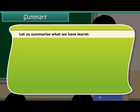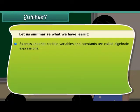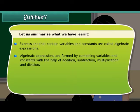Let us summarize what we have learned. Expressions that contain variables and constants are called algebraic expressions. Algebraic expressions are formed by combining variables and constants with the help of addition, subtraction, multiplication, and division.